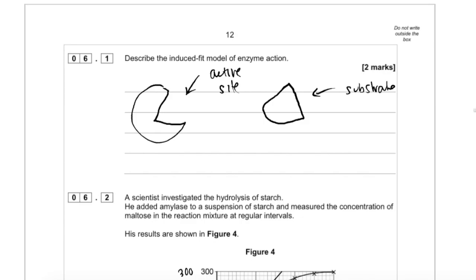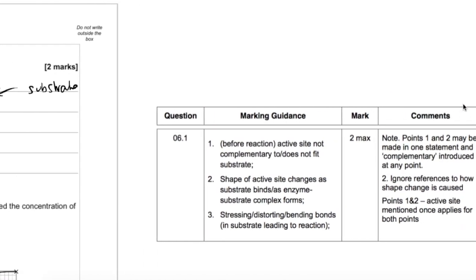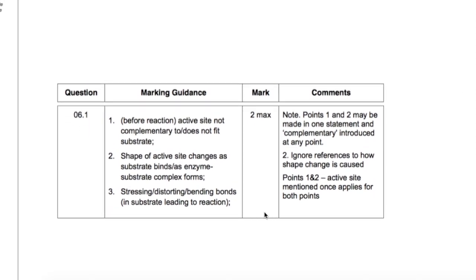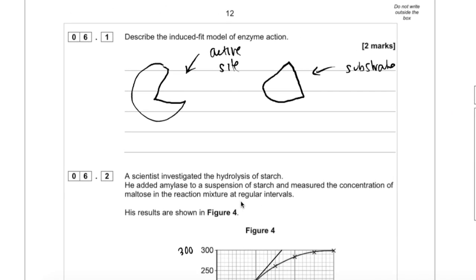So I'm not going to bother writing out the answer there. I'll just show you the mark scheme. There we have it - three possible marking points. The fact that the active site isn't complementary but the shape does change, and that distresses the bonds. That's all you need to know for the induced fit model of enzyme action.